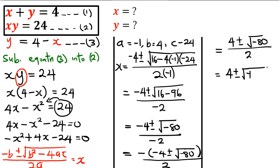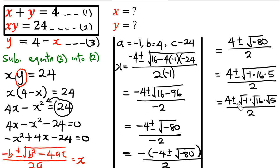The square root of minus 80 becomes the square root of minus 1, times the square root of 16, times the square root of 5, all over 2. This is the same as: square root of minus 1 times 4 times root 5, over 2. The square root of minus 80 is a complex value, which is why we need to separate out the complex part.